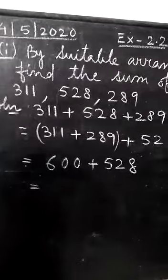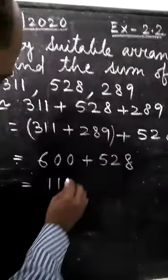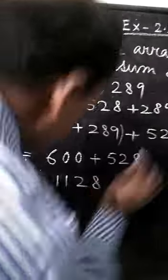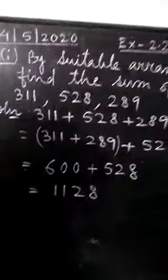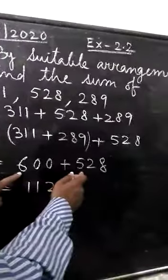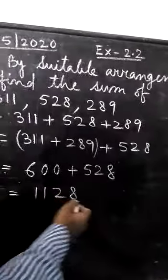Students, what will be the answer? 1, 1, 2, 8. 600 plus 500, 11, 100 and then 28. 11, 128 will be your answer.